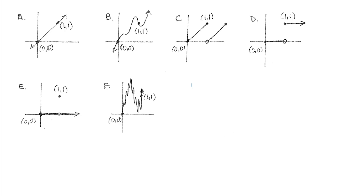One is that these graphs are all functions. They would all pass vertical line tests and satisfy the definition of what it means to be a function. They all have points at (0, 0) and another point at (1, 1). They all have a domain that includes everything between x equals 0 and x equals 1. Some of them have a domain that extends a little bit left of x equals 0, and some do not appear to based on the graph.